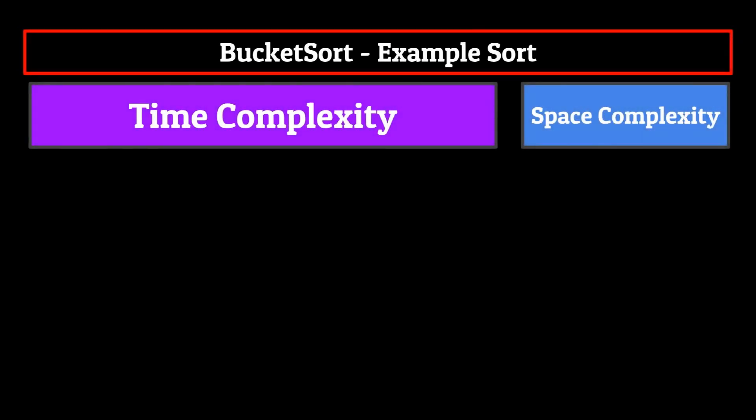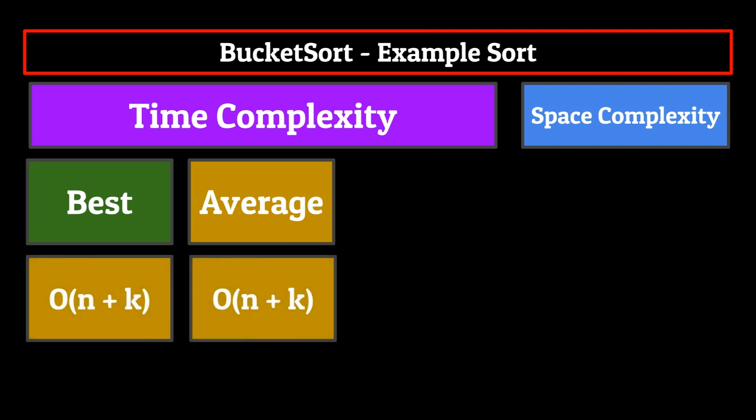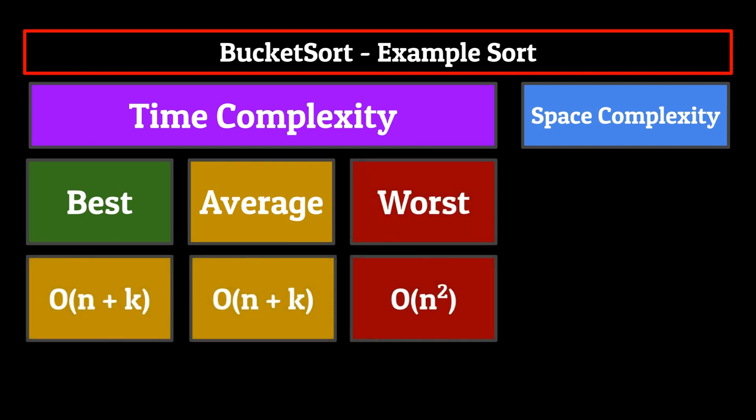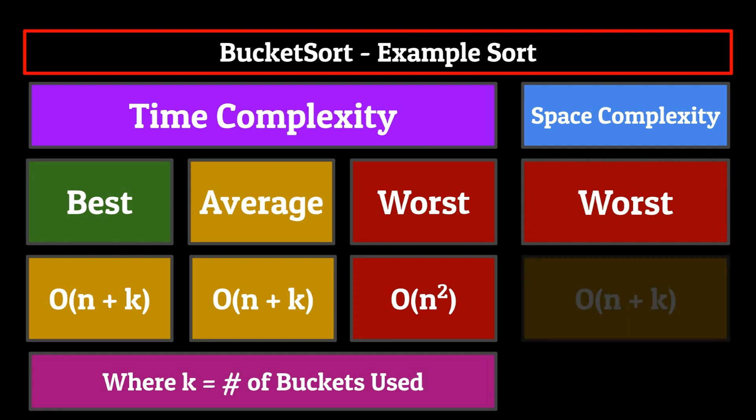As always, if you're interested, we'll have a video coming out later this week, which has more visualizations. Now we have to talk about the time complexity of bucket sort. The best and average case scenario time complexity equations are O of n plus k, and the worst case time complexity equation is O of n squared. K in this case is the number of buckets that we use.